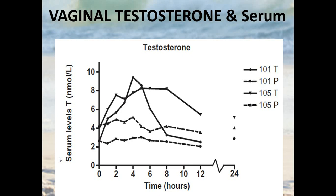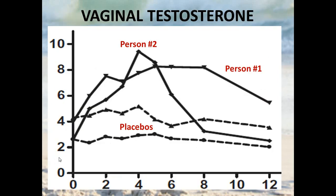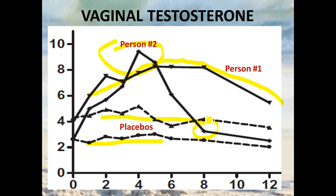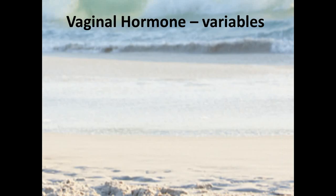Looking at testosterone values over time after vaginal testosterone application, one study shows the placebos — what these women look like when not on testosterone — and then two individuals. Person one looks ideal for testing: values rise gradually, stay high for several hours, then drop back down. Person two has more of a quick peak and is back to baseline by eight hours. So if you gave this person a vaginal hormone at night and tested in the morning, one person would be back at baseline, the other would not. The inter-individual variance can be significant enough to make testing quite challenging.